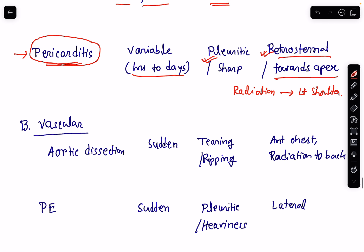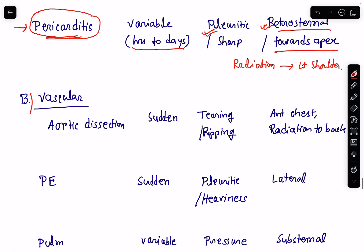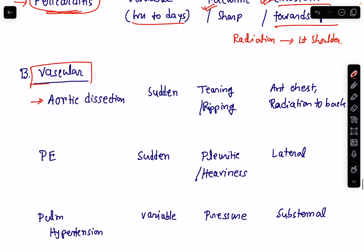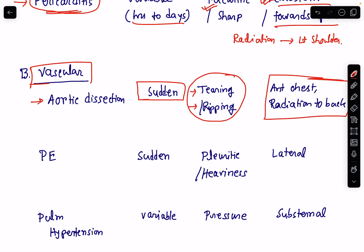Next are vascular causes of chest pain — aortic dissection. Aortic dissection is one of the life-threatening conditions which leads to chest pain. The onset is very sudden and the character is tearing or ripping, as if someone is stabbing with a knife. The location of the pain is in the anterior chest — retrosternal — and there may be radiation of the pain to the back.